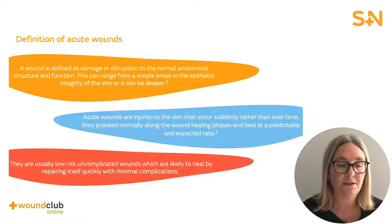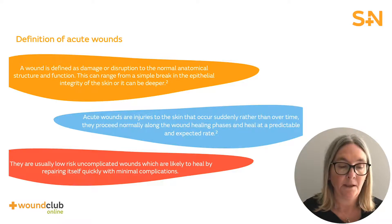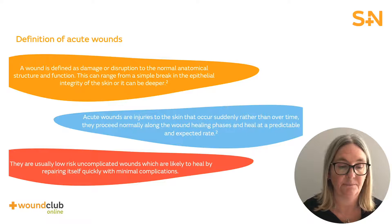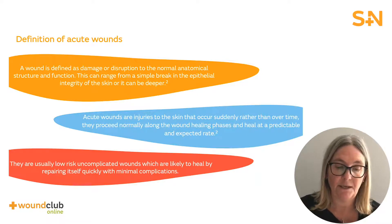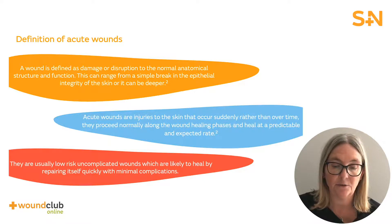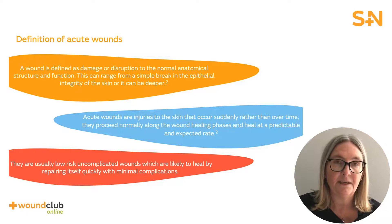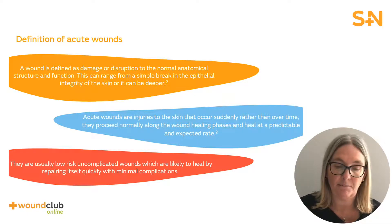Most wounds are usually the result of simple injuries; however, some wounds do not heal in a timely and orderly manner. Acute wounds can be acquired as a result of traumatic loss of tissue or a surgical procedure. Wounds can arise from pathological processes that begin externally or internally within the involved organ. They can have an accidental or an intentional etiology, or they can be the result of a disease process.